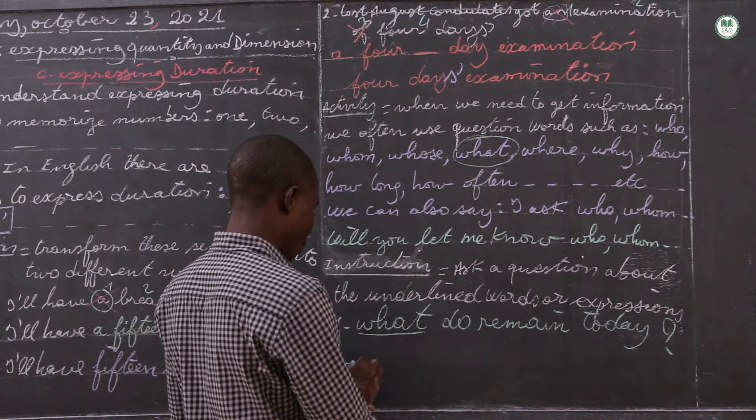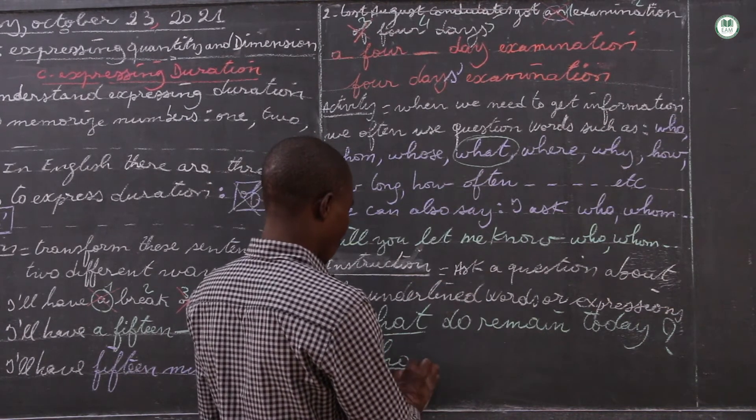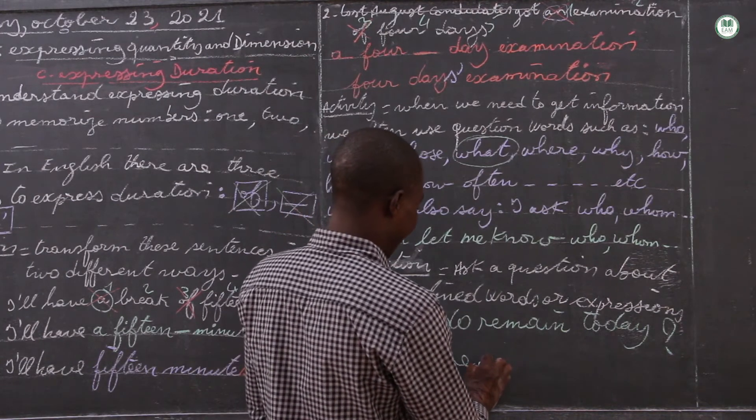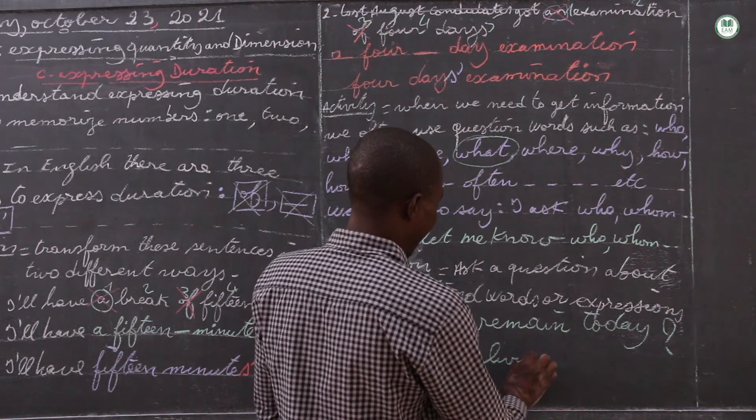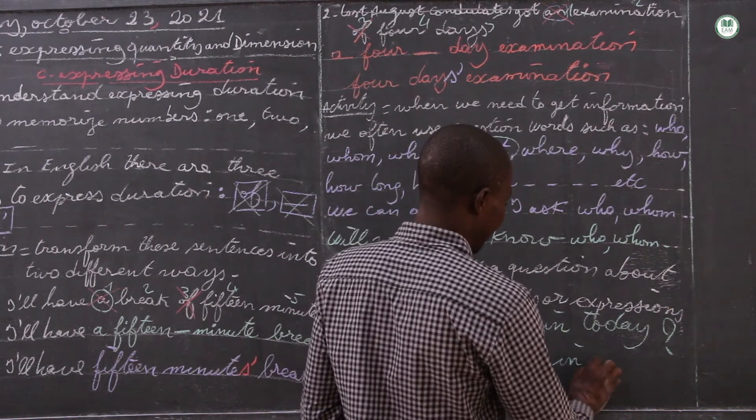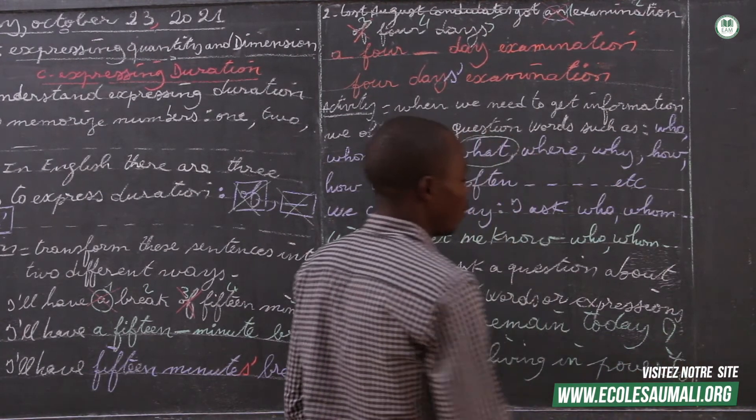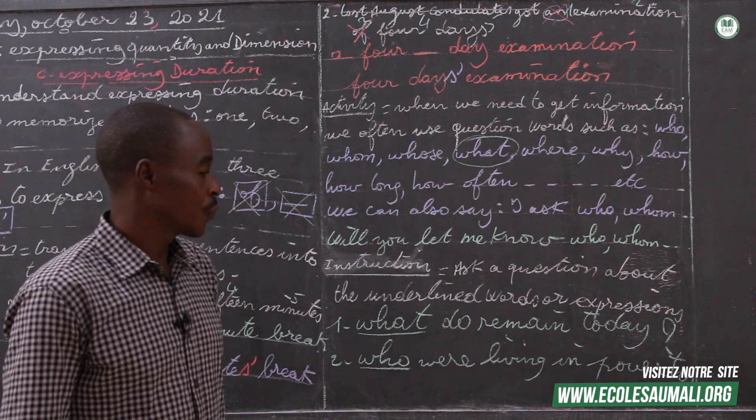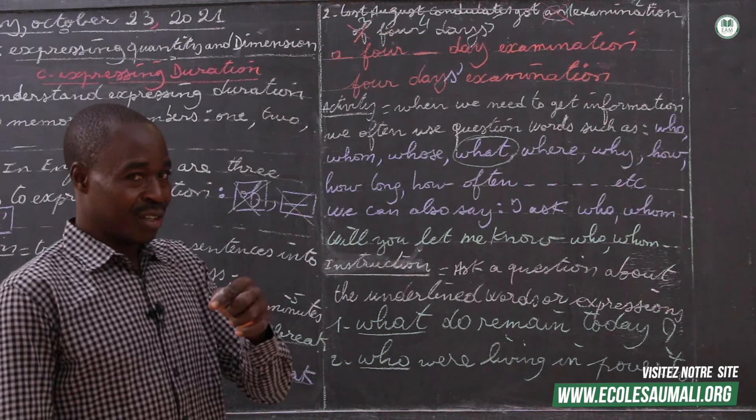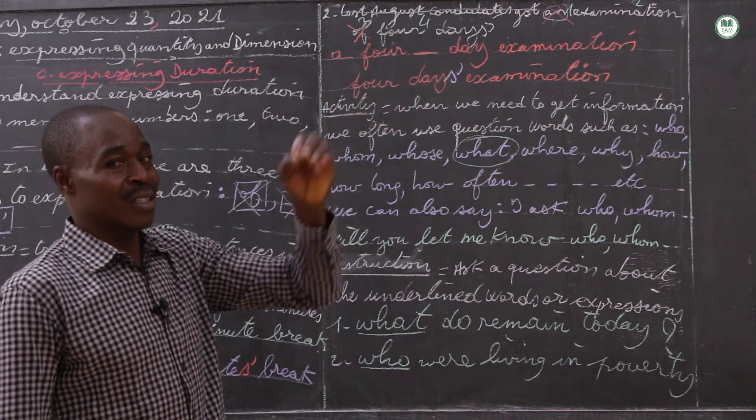Who were living in poverty? Yes. Who were living in poverty? The answer is illegal aliens were living in poverty.